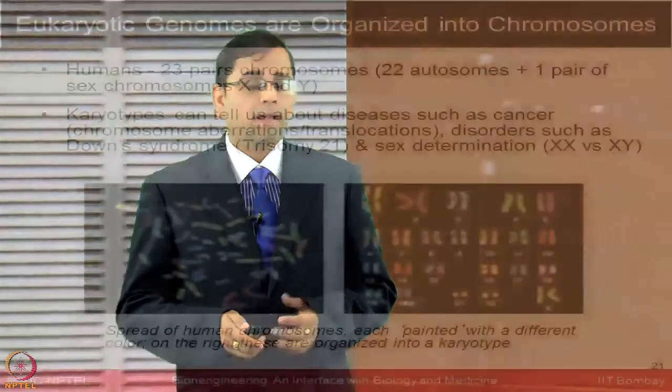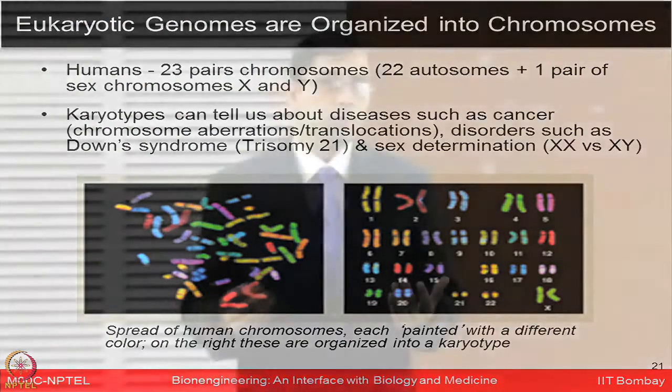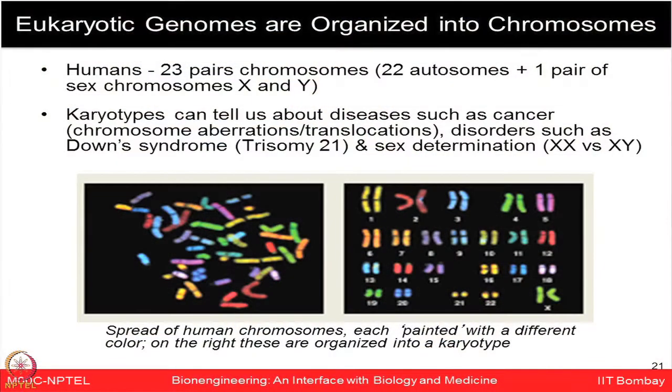Humans have 23 pairs of chromosomes — 22 autosomes plus one pair of sex chromosomes (X or Y). A process known as karyotyping looks at the pattern of each chromosome to determine whether the pattern is normal or if there is any abnormality. For many disorders, chromosomal aberrations can be found, helping deduce if a syndrome like Down syndrome or other chromosomal abnormalities are present. Sex determination also involves examining X and Y chromosome patterns.